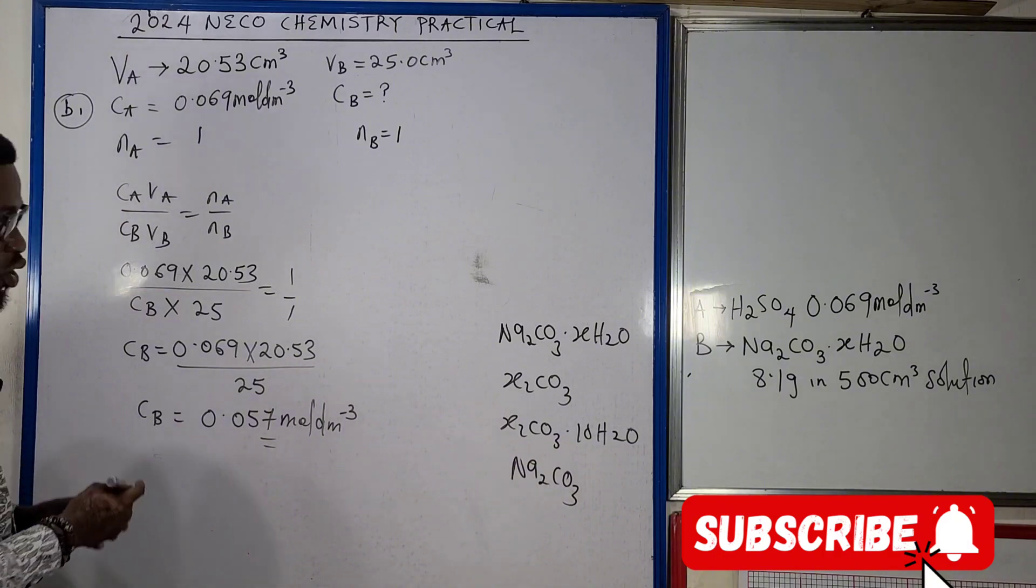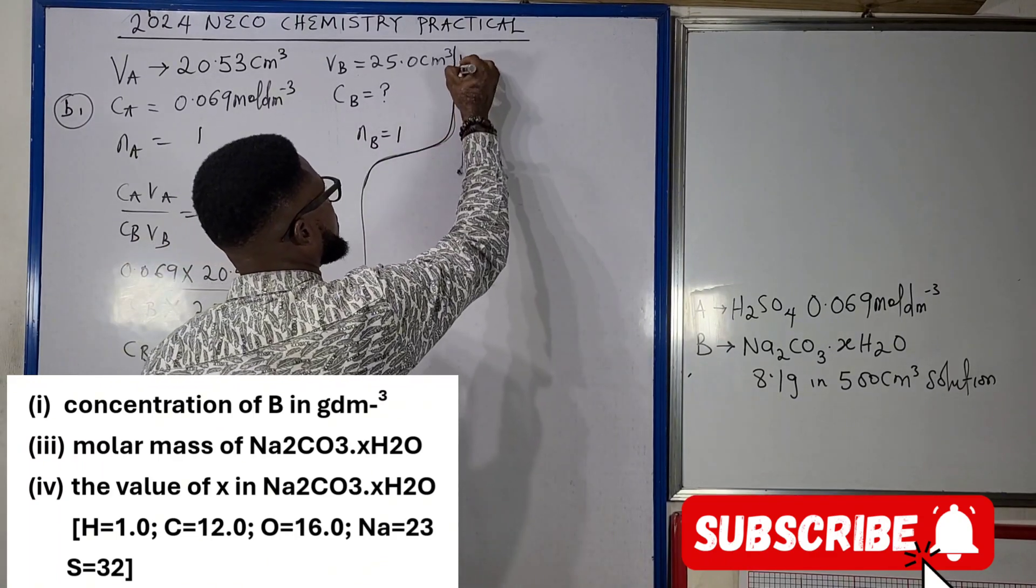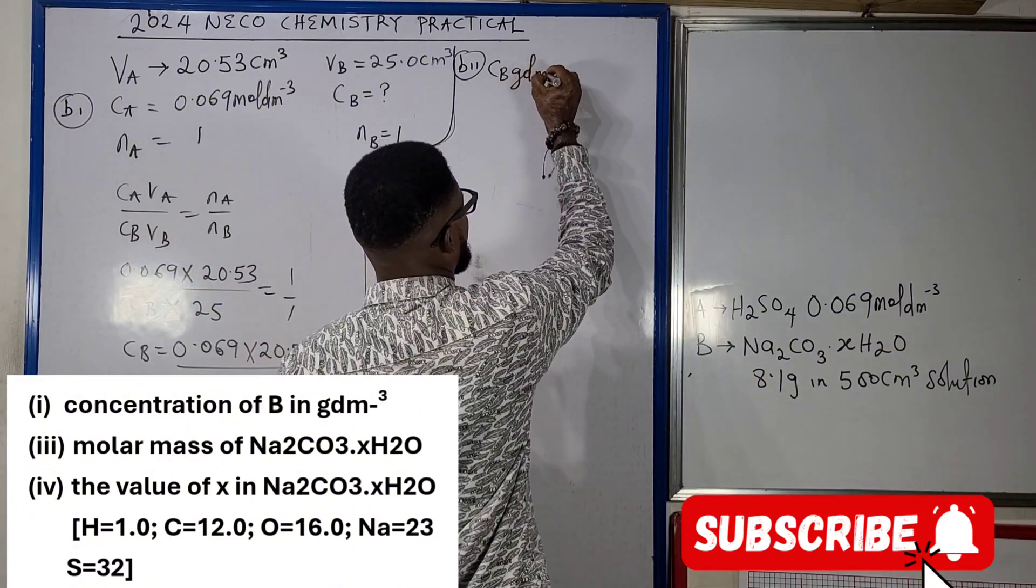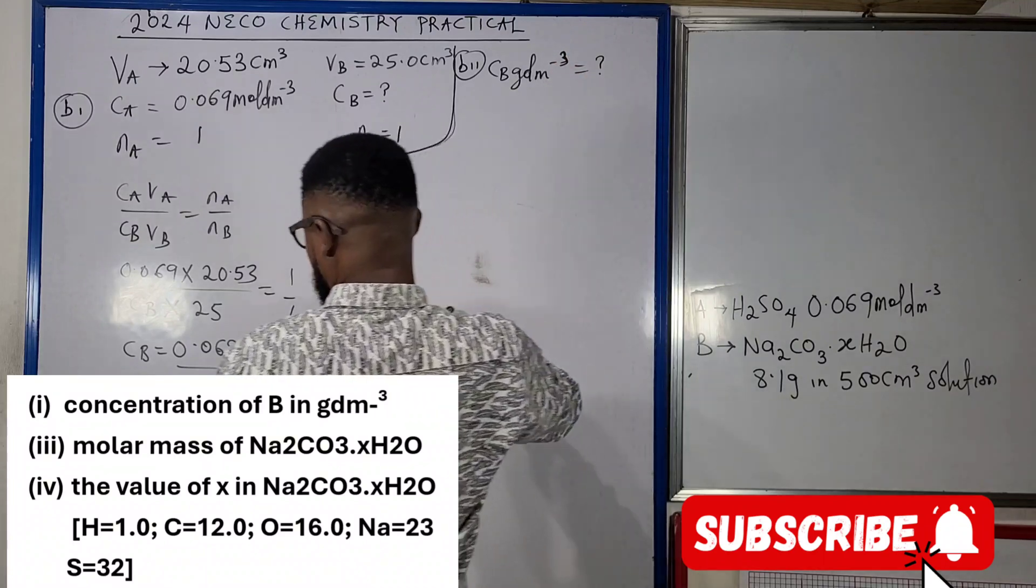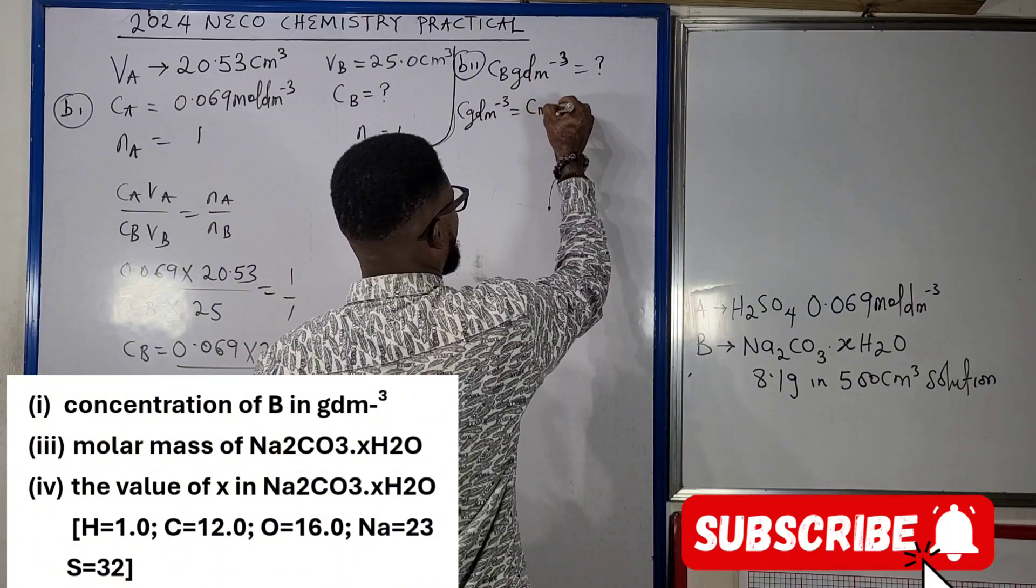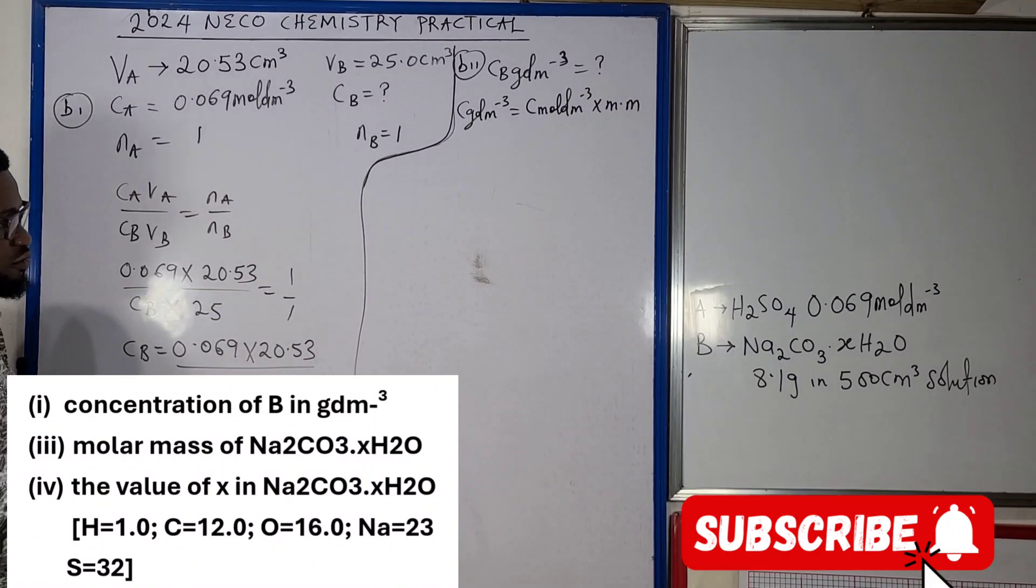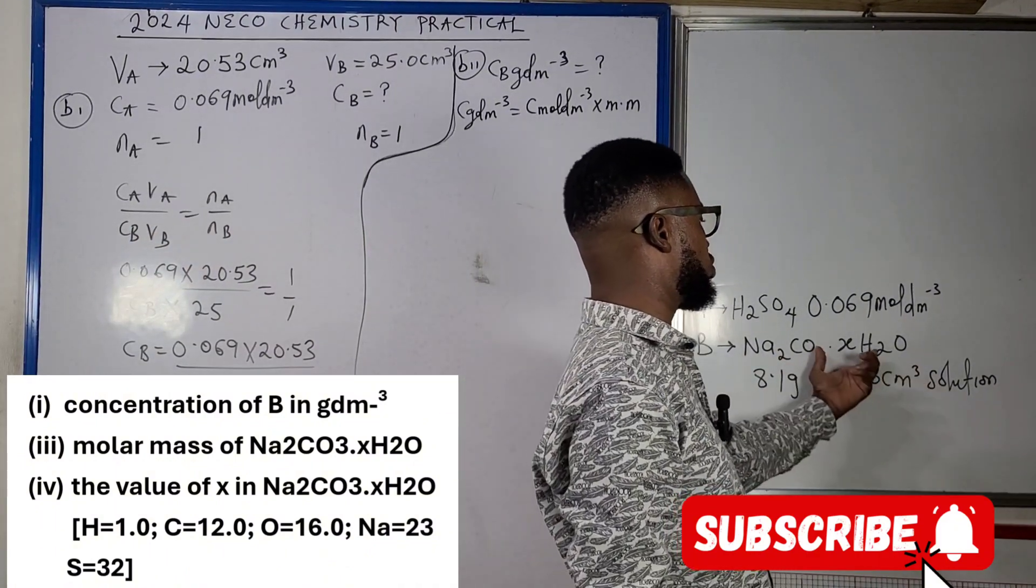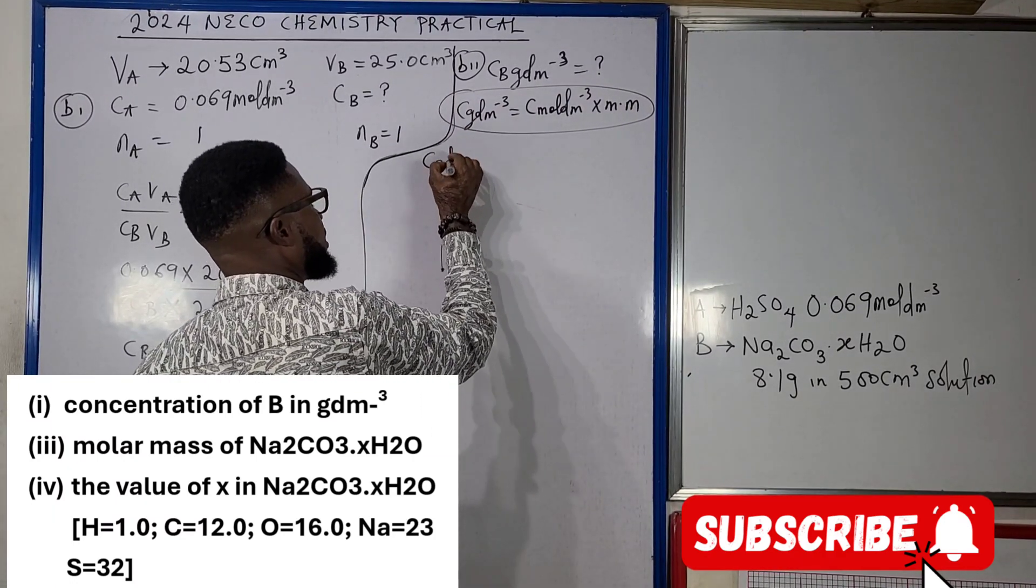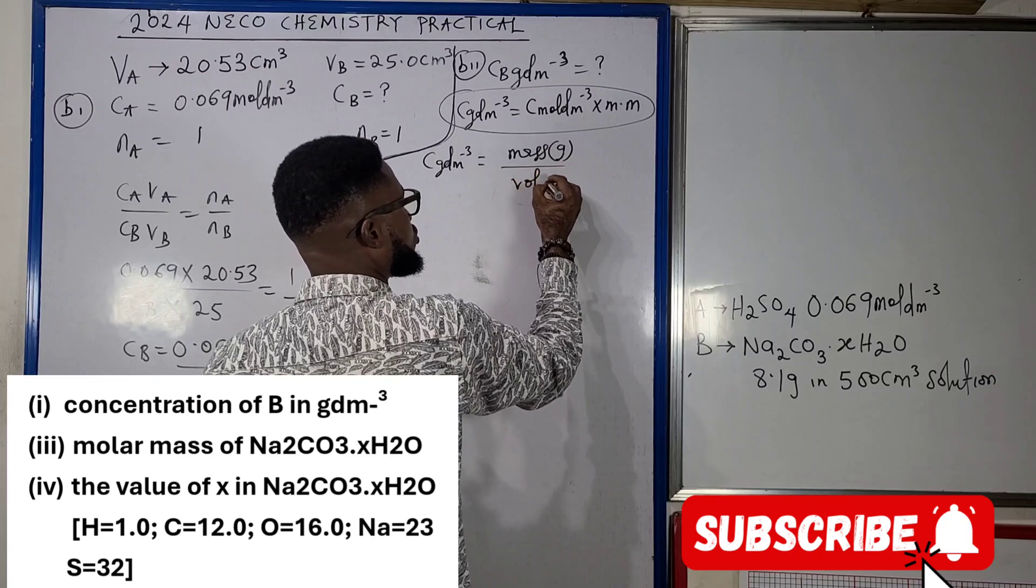That way we already know the concentration of our B in mole per dm cube. Straight to the next question, we were told to calculate the concentration of B in gram per dm cube. Concentration in gram per dm cube is actually concentration in mole per dm cube times molar mass. We know the concentration in mole per dm cube of B to be 0.057, we are dealing with Na2CO3 dot xH2O so we cannot get the molar mass. So the alternative method: concentration in gram per dm cube is actually the mass you have in grams divided by the volume of the solution in dm cube.